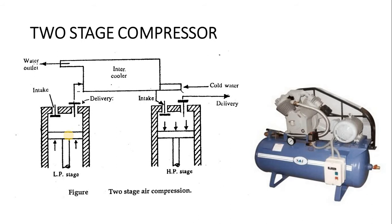So this is the main reason to use multi-stage reciprocating air compressor — that is, the two-stage reciprocating air compressor — for high pressure applications. The construction and working is the same as that of the single-stage reciprocating air compressor. Here you get two cylinders: on the left-hand side is the low pressure stage and on the right-hand side is the high pressure stage.